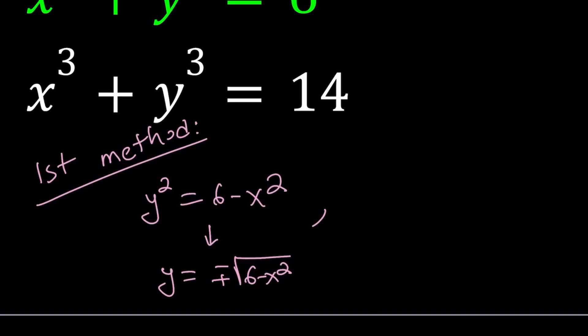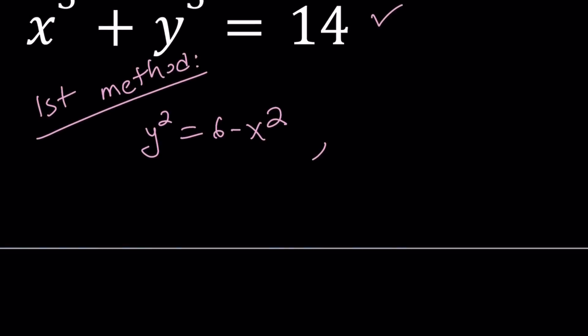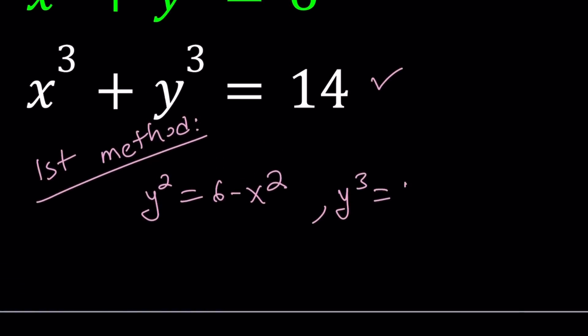So instead of doing this ugly, radical, crazy substitution, let's go ahead and do it this way. So we isolated y squared from the first equation. Let's go ahead and isolate y cubed from the second one. y cubed is 14 minus x cubed. Now, how am I going to work with this? I have y squared and y cubed.